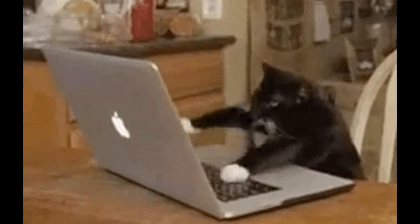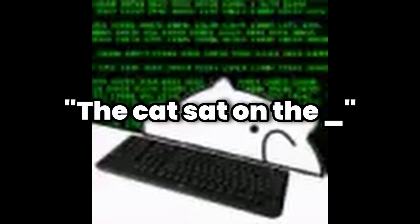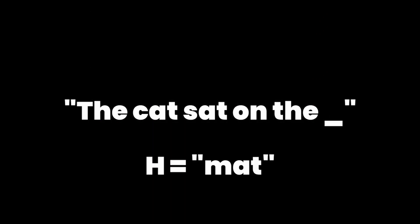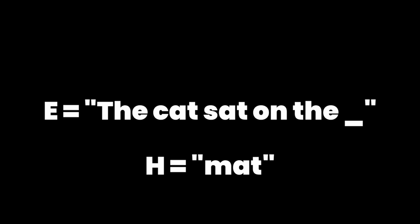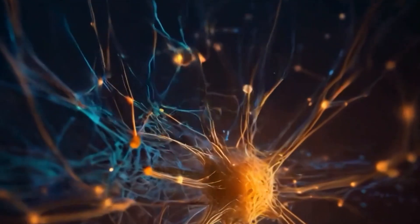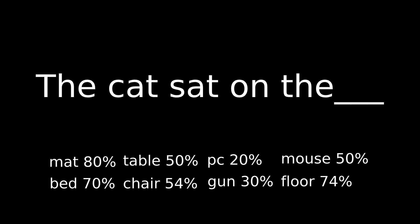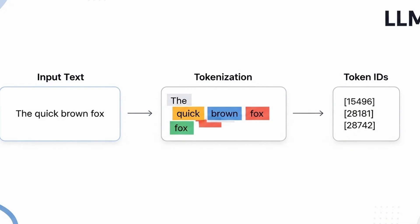Let's say the sequence of tokens represents the phrase 'the cat sat on the.' The LLM is now essentially solving a massive Bayesian problem. Its hypothesis H is a potential next token, like the token for 'mat.' Its evidence E is the immediate context — the entire sequence of tokens that came before it. It's trying to figure out the probability of the token 'mat' being the correct next one, given the evidence of 'the cat sat on the.' The neural network computes probability scores for thousands of possible next tokens, picks the one with the highest score, adds that token to the sequence, and then the whole process starts over again.